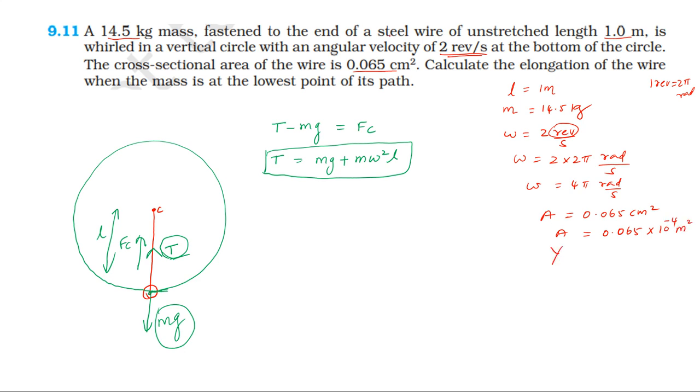Young's modulus of steel wire — from the textbook, Young's modulus of steel wire is 200 into 10 to the power 9 pascal.